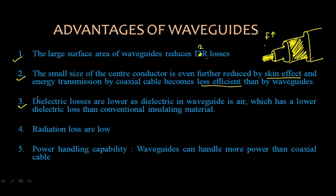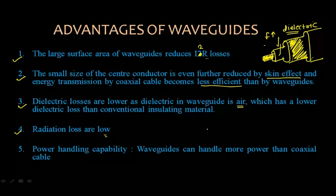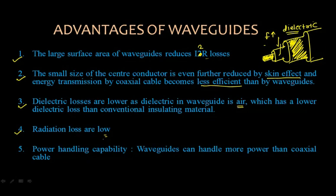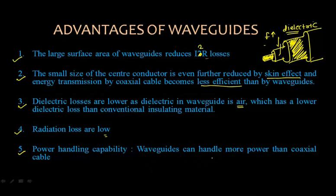The next advantage is lower dielectric losses. In a coaxial cable, the dielectric material between inner and outer conductors is not ideal, causing dielectric losses. In waveguides, air is used as the dielectric medium, which lowers those losses. Radiation losses are also low because of the waveguide geometry. Additionally, waveguides can handle more power than coaxial cables because losses are reduced.